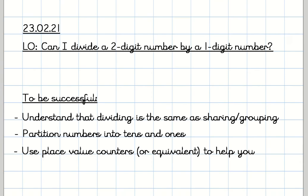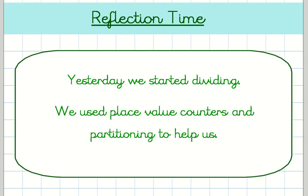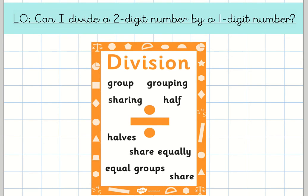Today we're going to be dividing a two-digit number by a one-digit number. So we're continuing with what we were looking at yesterday. We need to understand that dividing is the same as sharing and grouping, that to partition numbers into tens and ones can be helpful. And where possible, using place value counters or something equivalent to help you can be quite useful. Reflecting on what we did yesterday, we started dividing and we used place value counters and partitioning to help us. And today we're going to move that forward.